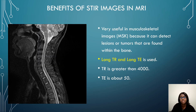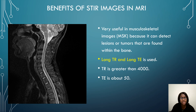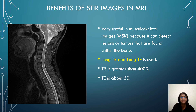The benefits of your STIR images in MRI — looking at this sagittal cervical spine, this is a STIR image and it is very useful in MSK. It can detect lesions or tumors found within bone. It will have a long TR and a long TE. The TR is greater than 4000 and the TE is about 50.